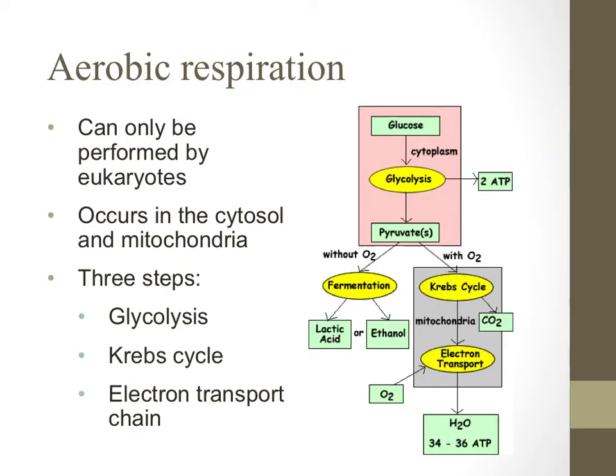Aerobic respiration is a process that, as the last slide indicated, requires oxygen. Not all organisms, however, can perform this type of cell respiration, even in the presence of oxygen. Since part of this process takes place in the mitochondria, only organisms that have mitochondria, or eukaryotes, can perform this process.